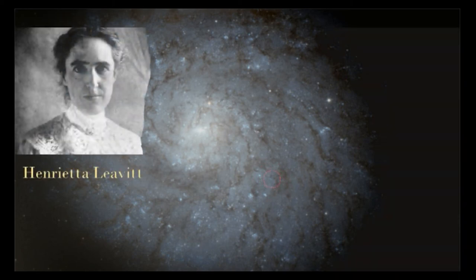Henrietta Leavitt was a specialist in Cepheid variable stars. She found a number of these variable stars in a cluster together, all of them the same distance from Earth. She observed that slowly cycling stars were brighter. The faster stars were dimmer.